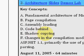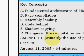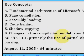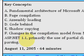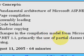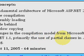He talks about shadow copying, and he also talks about changes in the compilation model from 1.1, where in 2.0 we're now using partial classes.